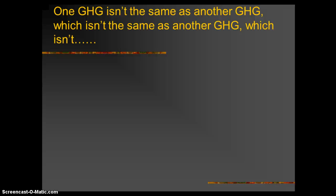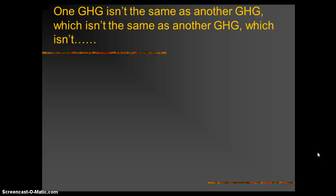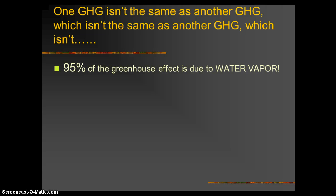One GHG is not the same as another — the way they absorb and release energy differs, and some are far more powerful than others. Some exist in much greater quantities, giving them a larger overall impact. To put it in perspective: 95% of the greenhouse effect is due to water vapor alone, meaning only 5% is due to all the other greenhouse gases combined.